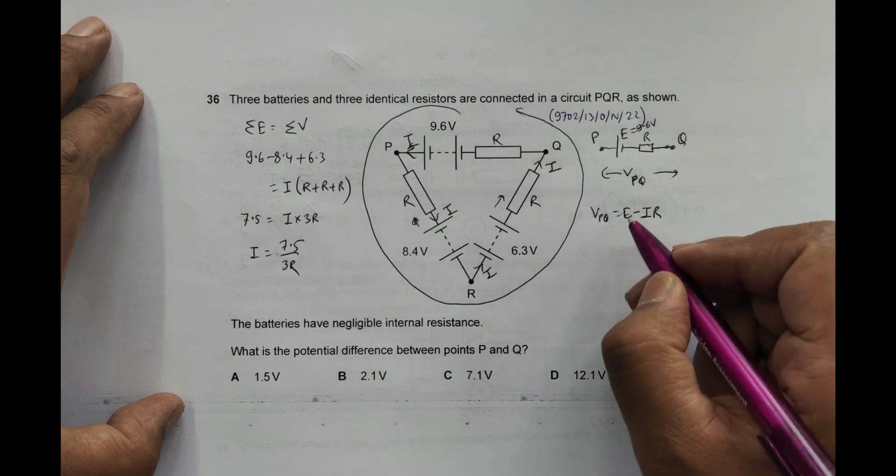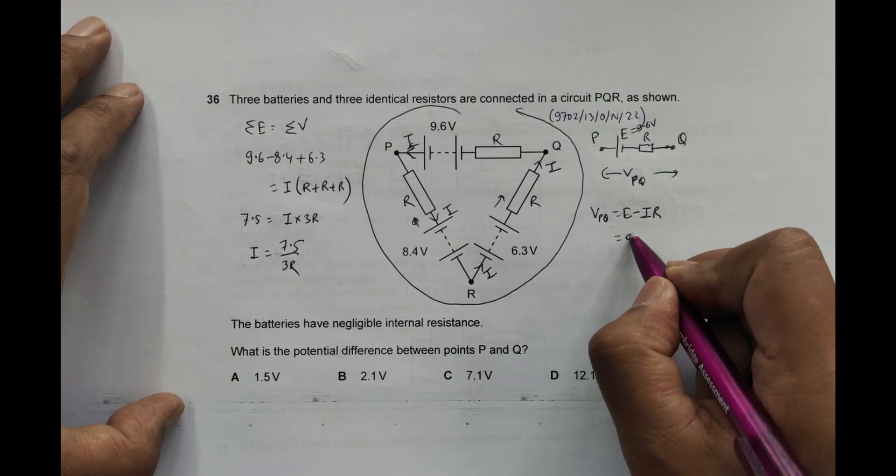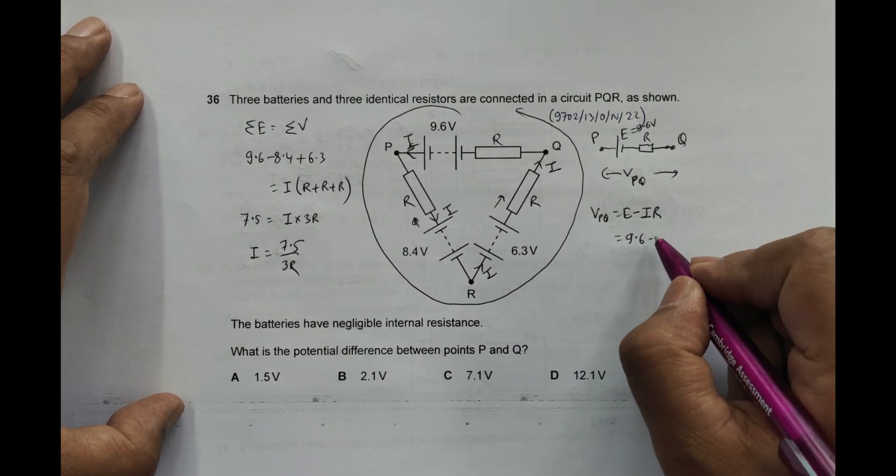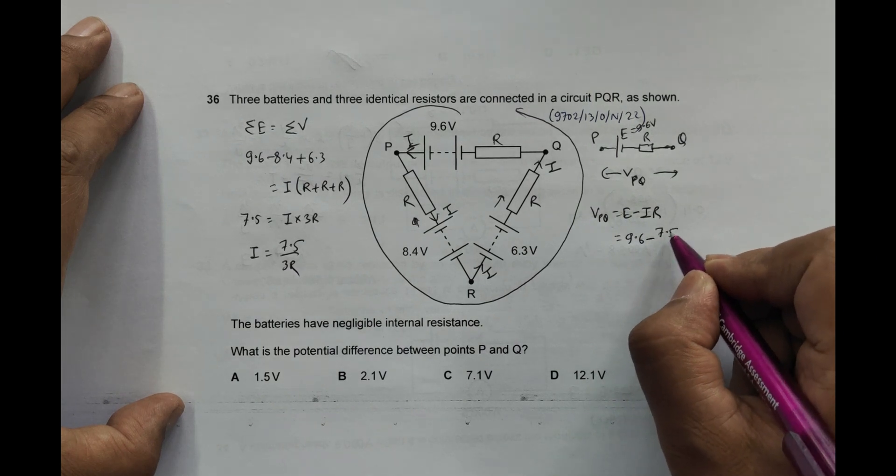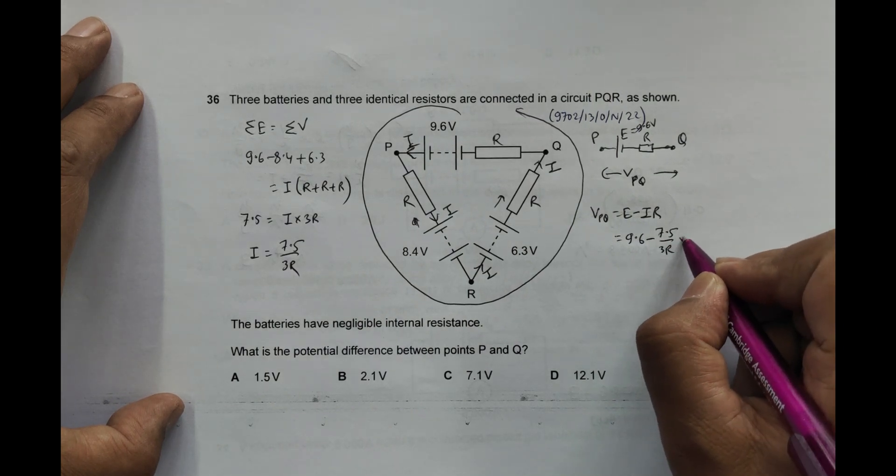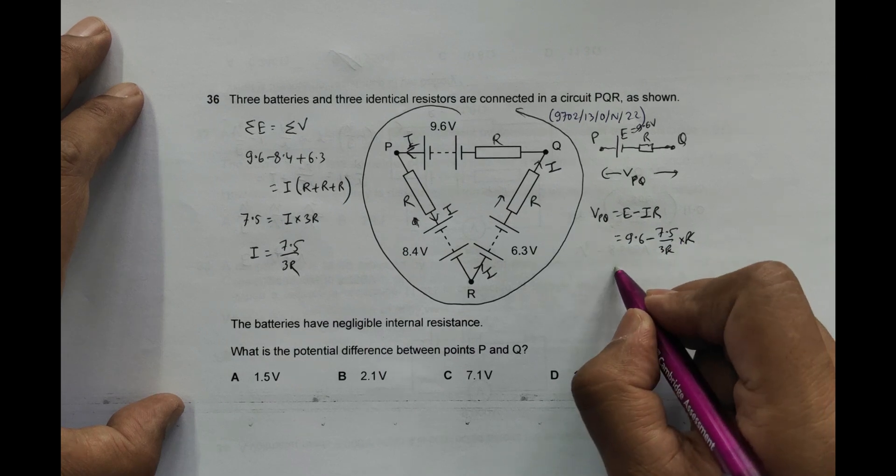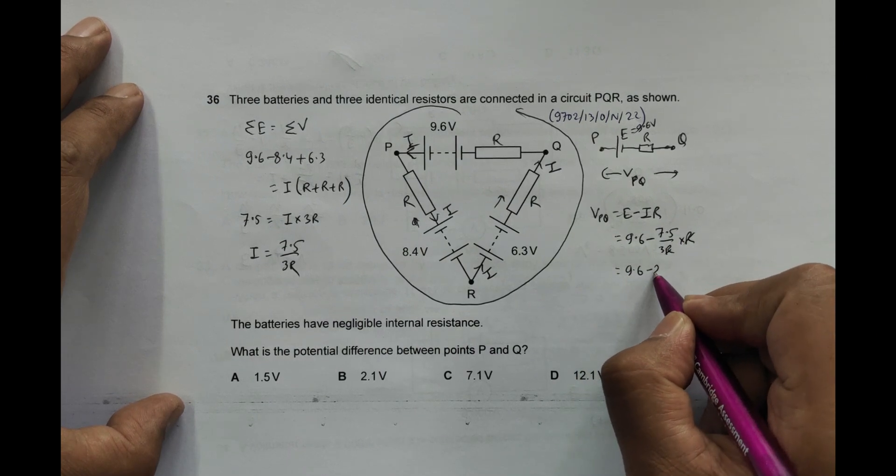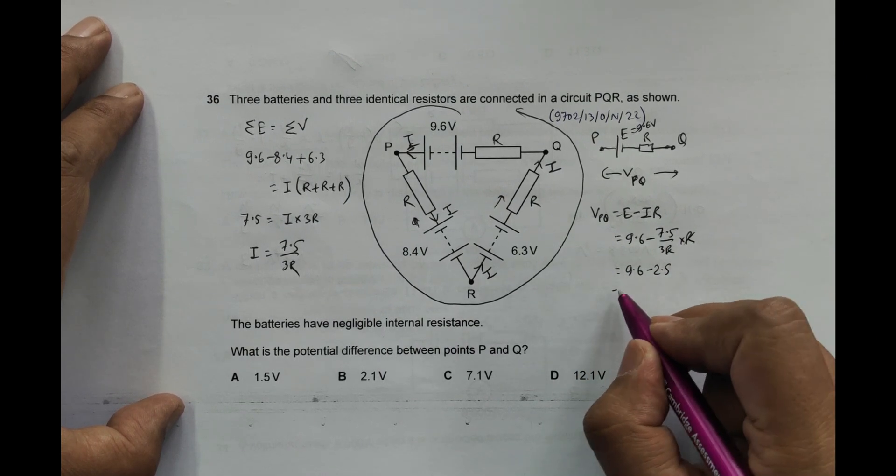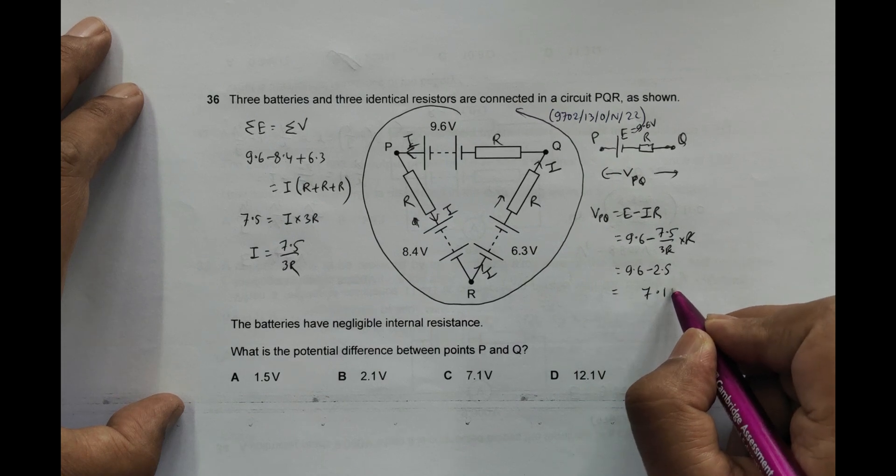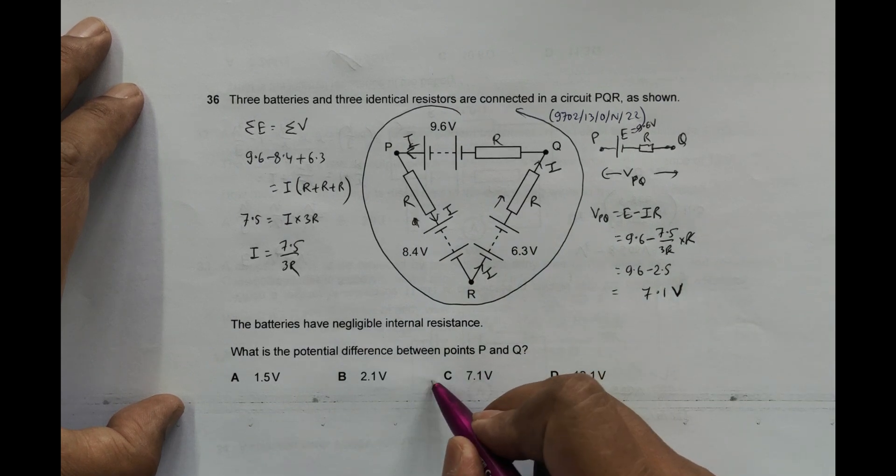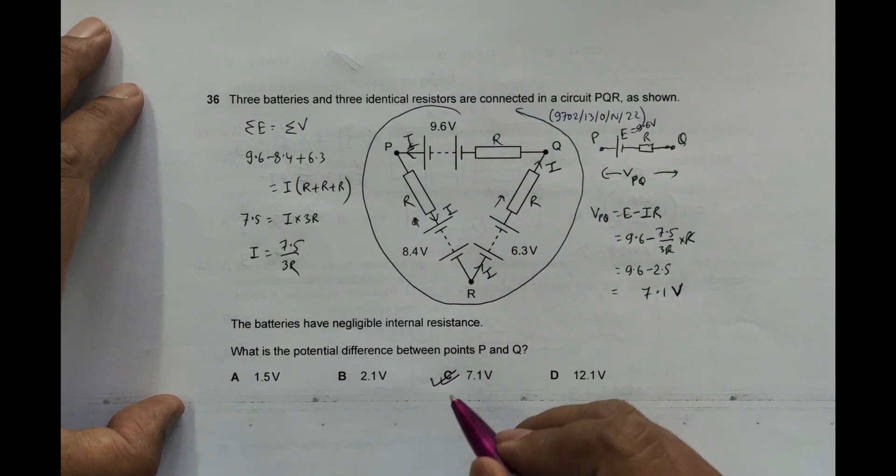So VPQ equals E which is 9.6 minus I which is 7.5 by 3R into this R. The R's cancel. This is 9.6 minus 2.5, which gives us 7.1 volts. So the correct answer will be C, 7.1 volts.